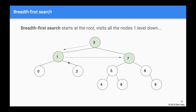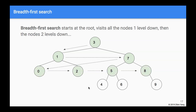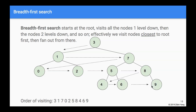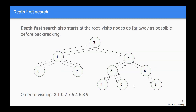Then we visit all the nodes that are two levels away from the root, and then three levels away, and so on and so forth. Effectively what we're doing is starting with the root and then visiting all the nodes closest to the root first, and then kind of fanning out from there level by level. That is what's called a breadth first search.